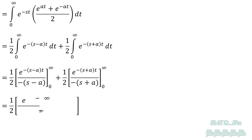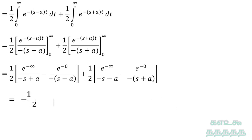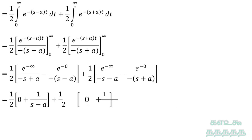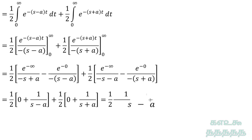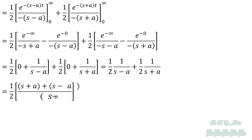Substituting the upper limit minus lower limit: e to the power minus infinity is equal to 0, and e to the power minus 0 is equal to 1. Simplifying the equation and taking 1 by 2 common.